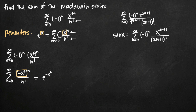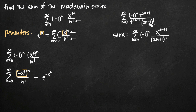Now let's do another example. We have the sum from n equals zero to infinity of the quantity negative one raised to the n times pi to the 2n plus 1, divided by 4 to the 2n plus 1 times the quantity 2n plus 1 factorial. The well-known sum for sine of x breaks down into this Maclaurin series. We'll use it because we already have the 2n plus 1 factorial and negative one to the n in our series, so things are similar.